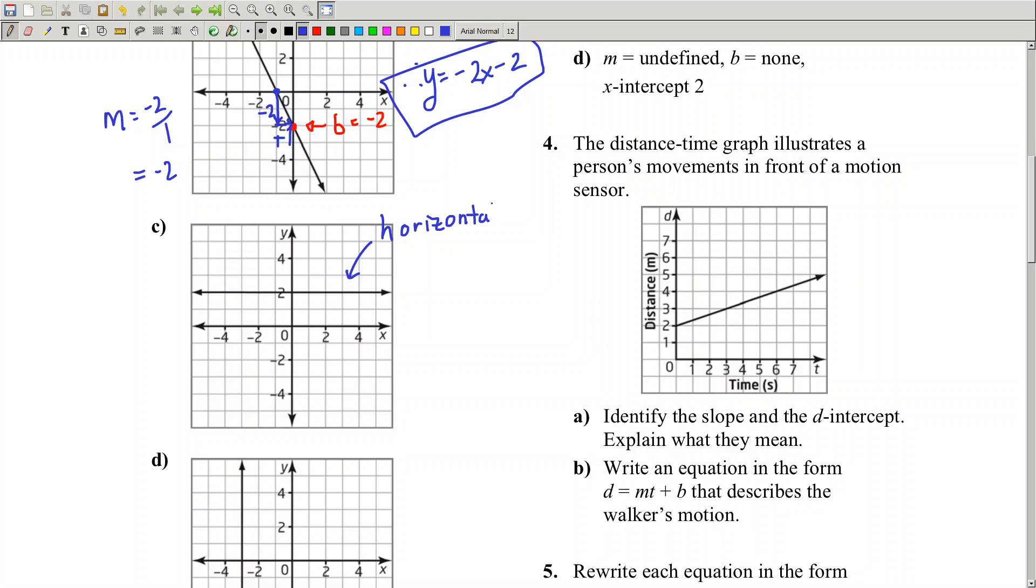This is called a horizontal line. We've calculated slopes of horizontal lines, vertical lines, and regular straight lines. Horizontal lines have a slope of zero. Why is that true? This line has no rise at all.